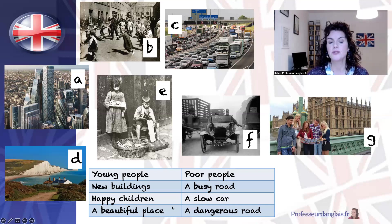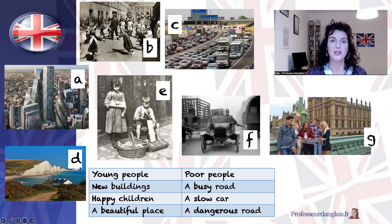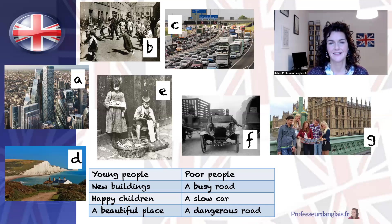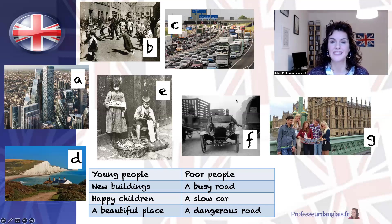Where can you see a beautiful place? Well, for me, I think picture D is a beautiful place, but you might think picture A is also a beautiful place. And the last one — a dangerous road. Where can you see a dangerous road? Picture F and picture C both look quite dangerous. Picture C because it's so busy. But we have two dangerous roads.